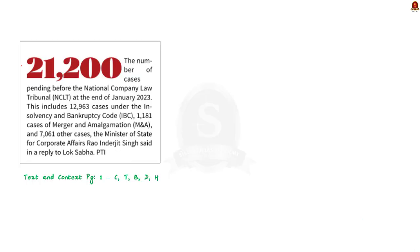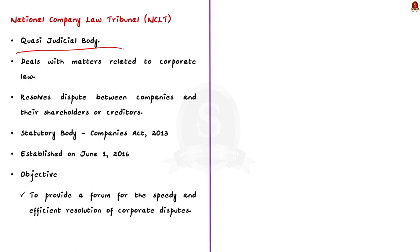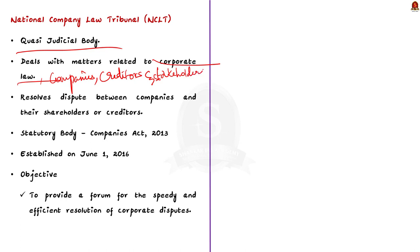The next article says that the number of cases pending before the National Company Law Tribunal as of January 2023 was 21,200. In this context, let us revise about NCLT. The National Company Law Tribunal, NCLT, is a quasi-judicial body that handles matters related to corporate law, including disputes between companies and their stakeholders or creditors. The NCLT was established under the Companies Act 2013 and began functioning on June 1, 2016. Its main objective is to provide a forum for the speedy and effective resolution of corporate disputes.